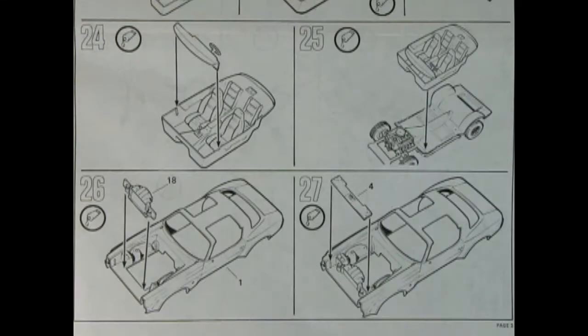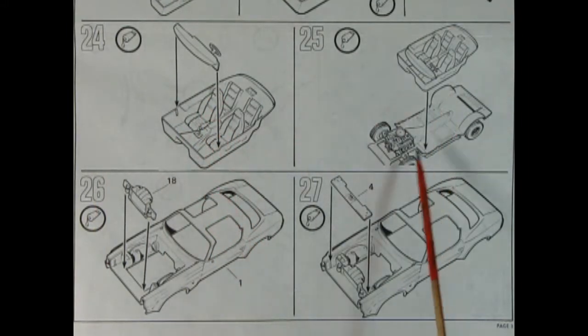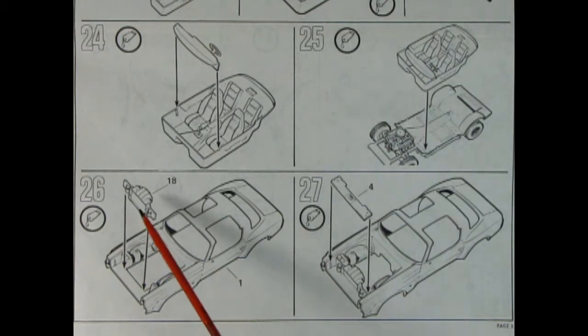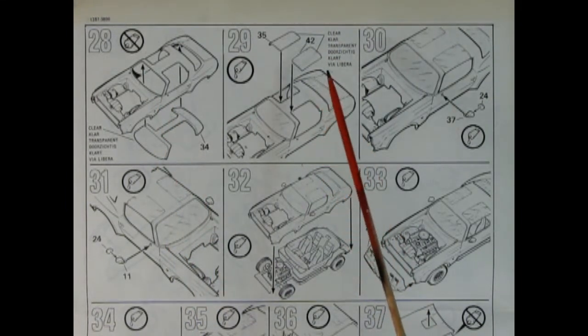When you get into panel 24, the dashboard drops into place into our tub. The tub then drops onto our chassis. Our radiator wall and support go in here and then we've got a top cover which is pretty rare in model kits, but that goes onto the front. Panel 28 shows our glass going in from underneath.